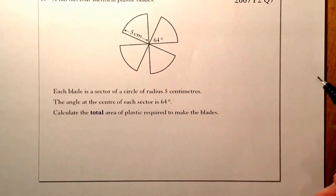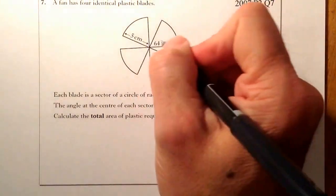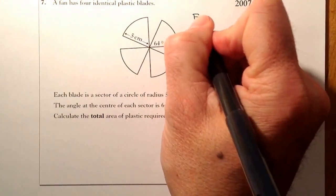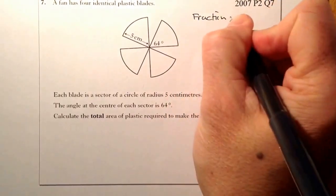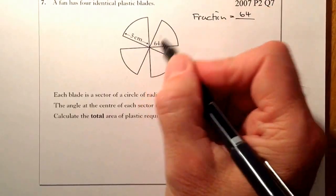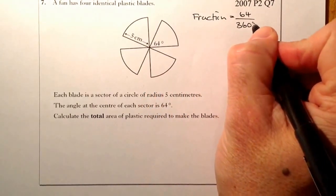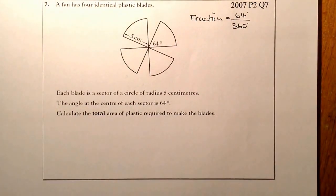Okay then, so an area of a sector type question. Let's identify the fraction if I work out the fraction of one blade first. The fraction is going to be 64 divided by 360 degrees. That's the fraction I'm going to use to work out the single blade.